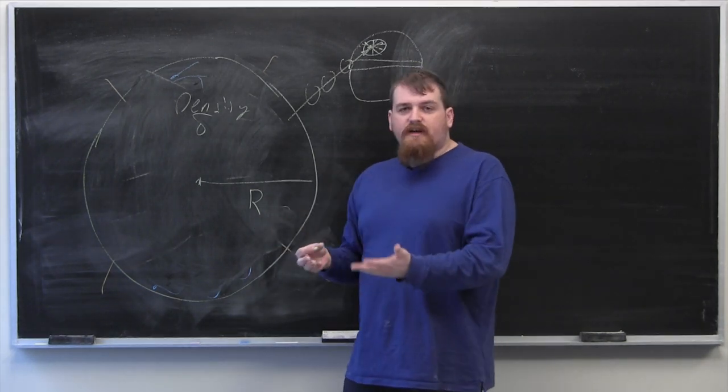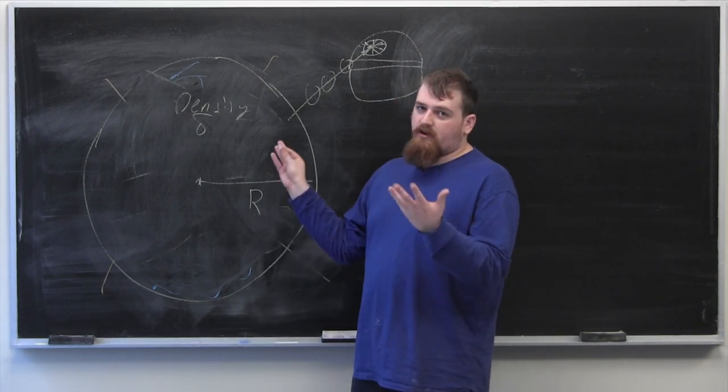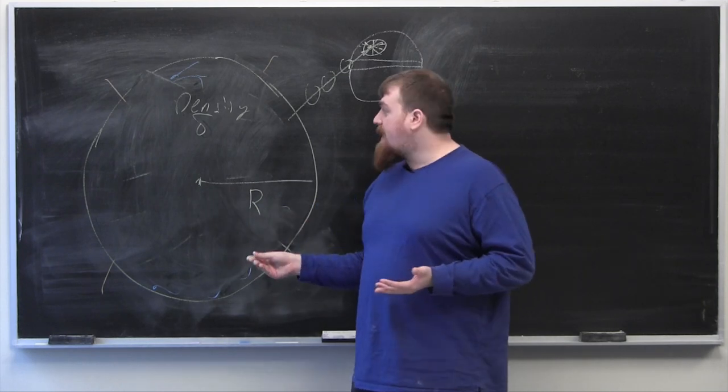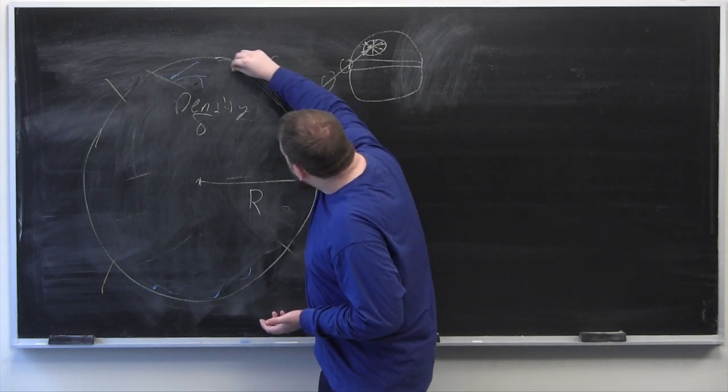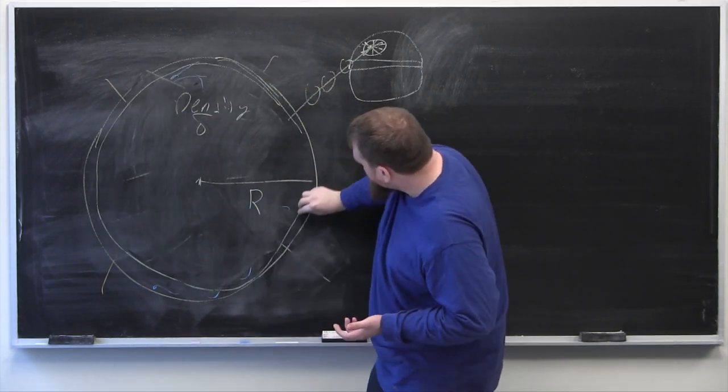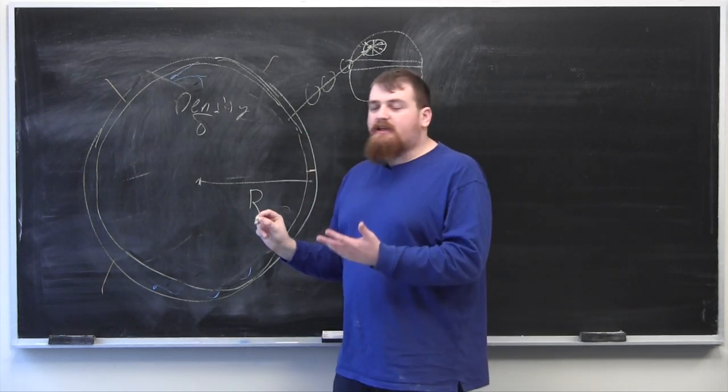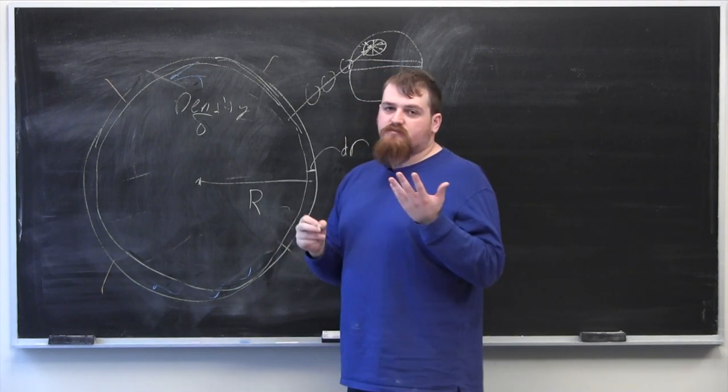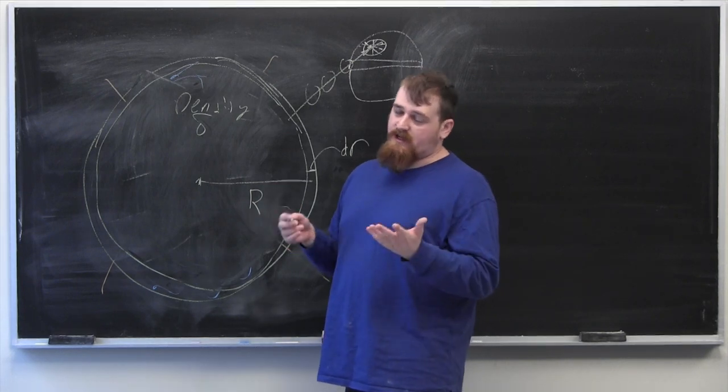So because of conservation of energy, the order in which we mass scatter Alderaan doesn't matter. So if we want to do it in a way that's symmetrical, what we could do is take off shells of the planet, one shell at a time, where we let each shell have thickness dr, which in the limit case we're going to take to be infinitesimal because we're going to be using an integral.